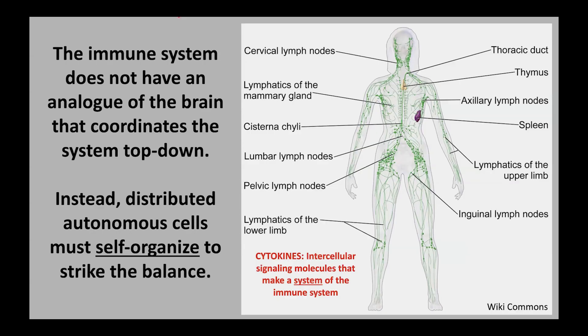I want to talk a bit more about that balancing act and how we think selection may have shaped immune system capacity. First, the immune system does not have an analog of the brain — it doesn't have a central organizing, top-down control structure. There's no analog of the brain controlling the system across all the lymph nodes and lymphatic vessels of the whole body. Instead, it's the distributed autonomous cells — the individual trillions of cells spread across the body — that must self-organize to strike the balance. Cytokines are among the really important intercellular signaling molecules via which cells of the immune system coordinate.